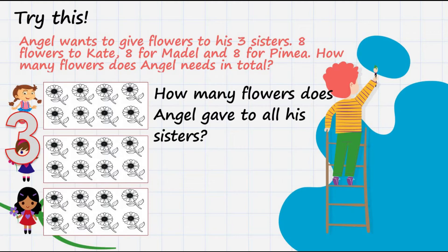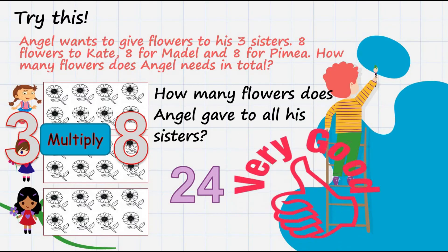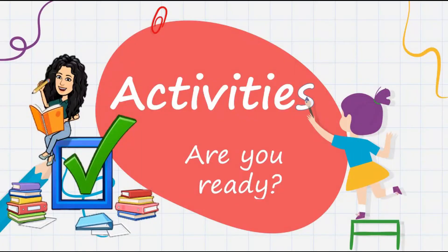Angel has 3 sisters, and each sister has 8 flowers. Now, multiply 3 and 8. The answer is 24. Very good. Are you ready for the activities?